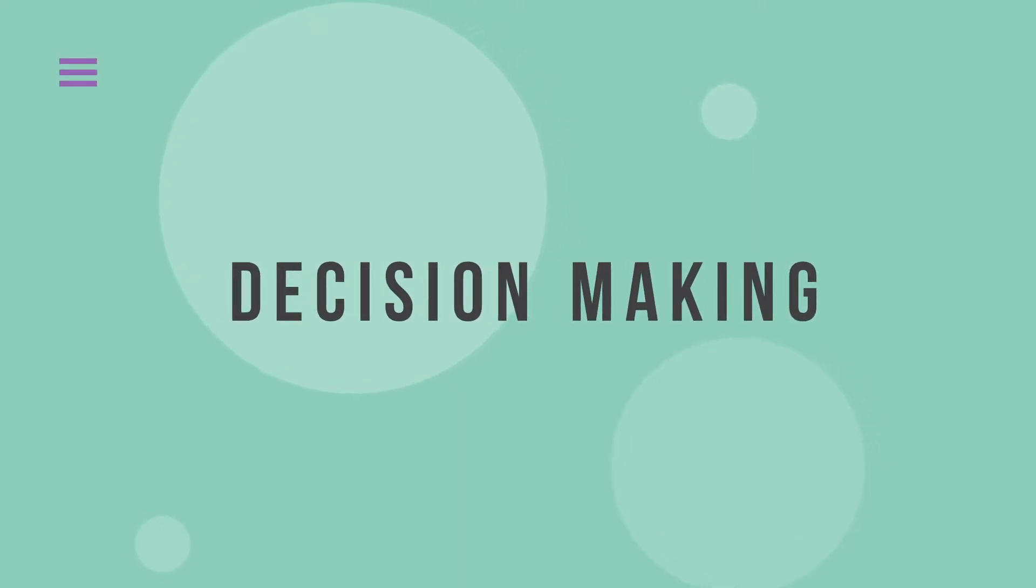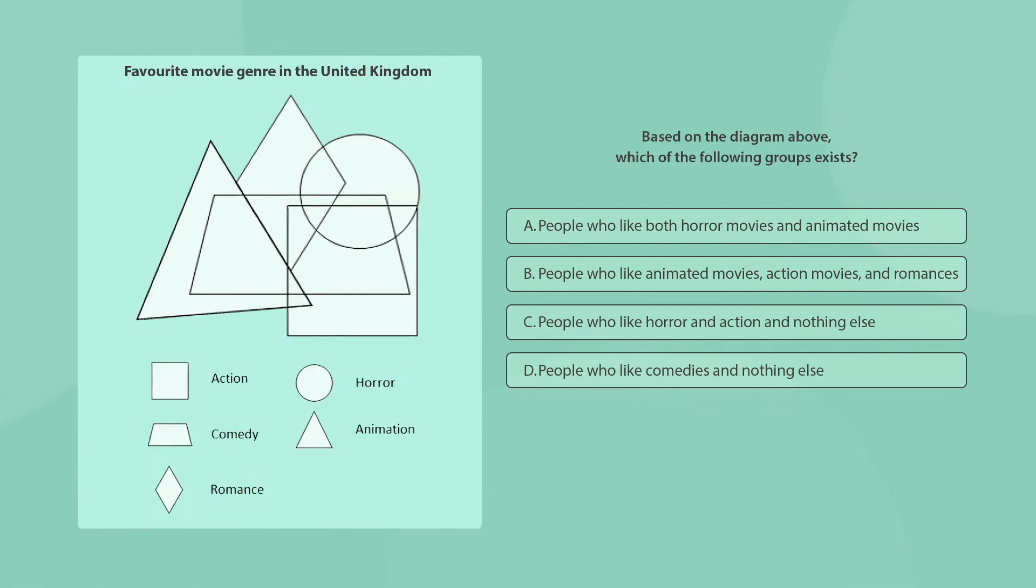Let's move on to the second subtest of the UCAT – Decision Making. This subtest consists of questions that refer to charts, diagrams, and other types of data representation to assess your ability to apply logic and reach conclusions based on the given information. You'll have 32 minutes to answer 29 questions. Let's look at a diagram sample question. Pause the video, try to answer it yourself, then continue watching to see if you got it right.